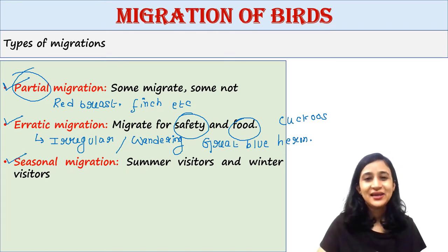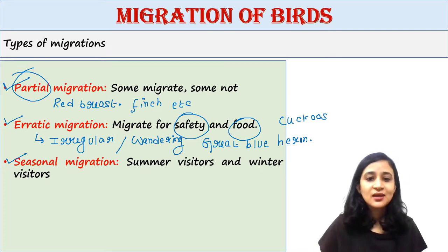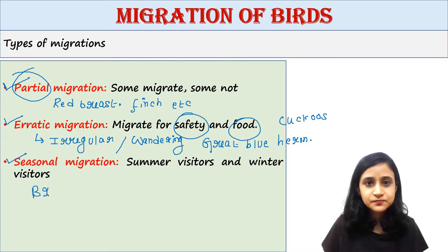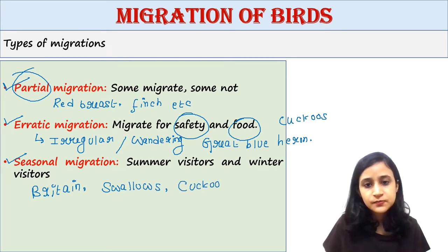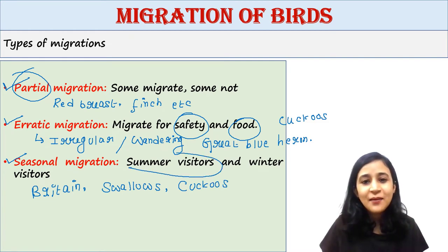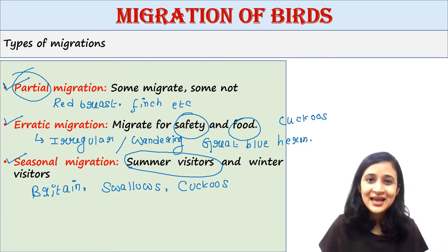Next is seasonal migration. Some migratory birds are classified according to seasons. For example, in Britain, there are some birds like swallows and cuckoos that are summer visitors because they arrive in spring from the south and remain there to breed, then leave for the south in autumn.